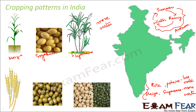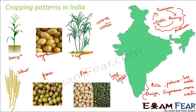On the other hand, plants like gram, wheat, and pea need less water. For such plants, it is best to grow them during a season with less water availability, so their cultivation is matched to the season that suits their requirements.